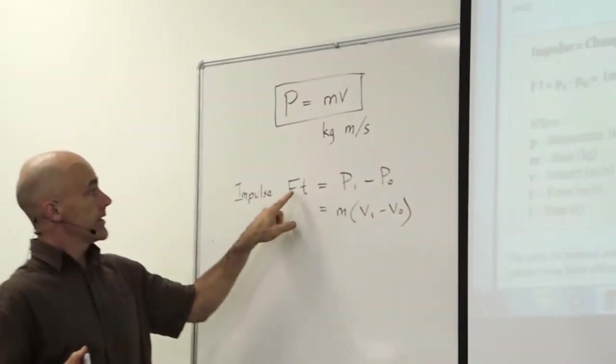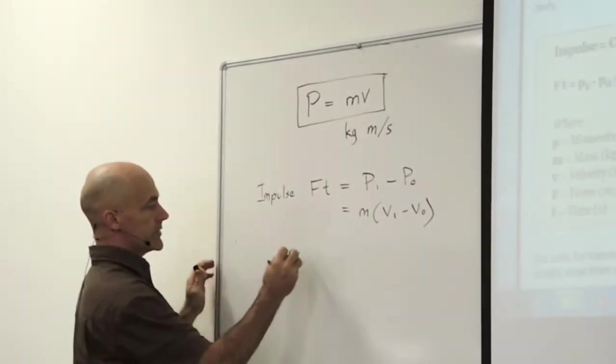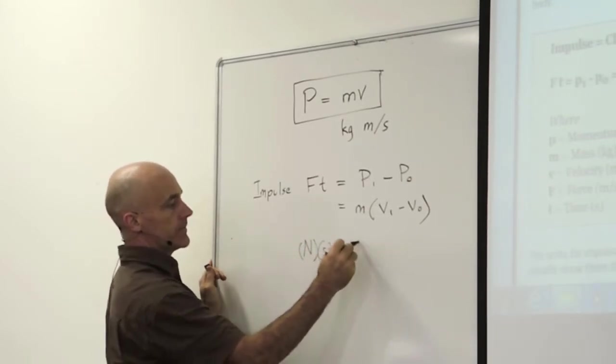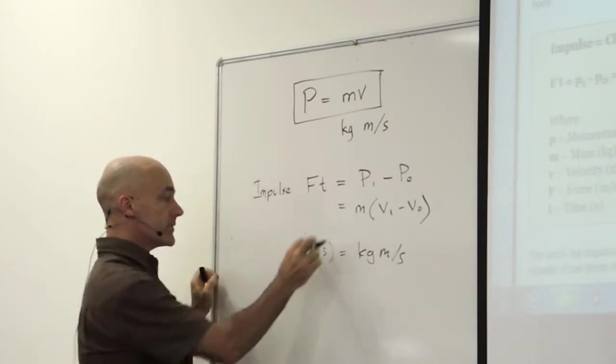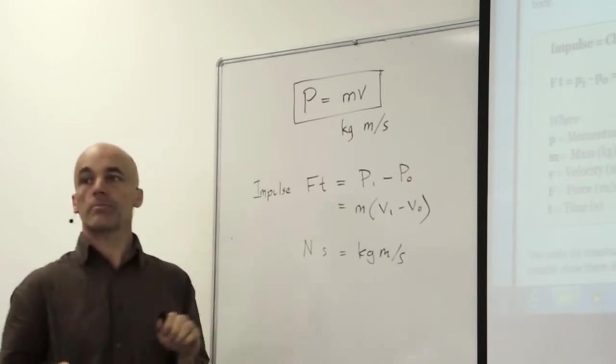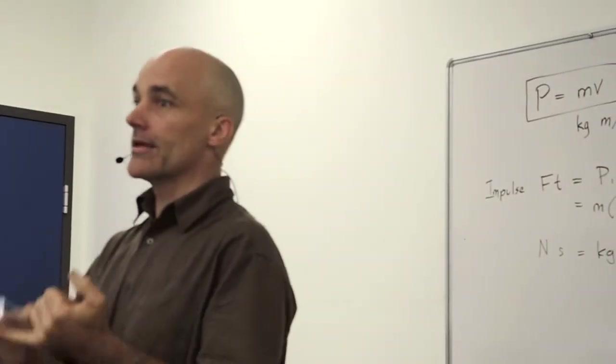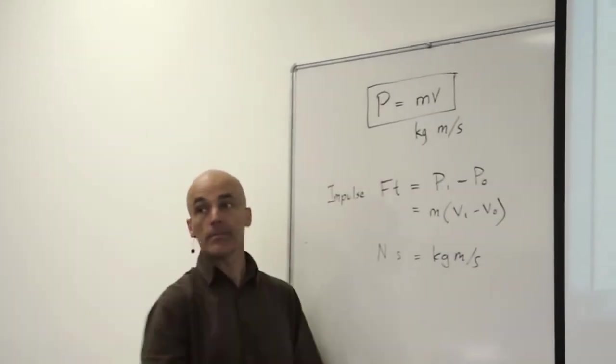Now actually, that says that force times time equals momentum. Force is newtons and time is seconds, so newton seconds is momentum. A kilogram meter per second is a newton second. We could have said momentum in newton seconds, but we don't because we'd get mixed up with impulse. So impulse is in newton seconds, momentum is in kilogram meters per second, even though they're the same.